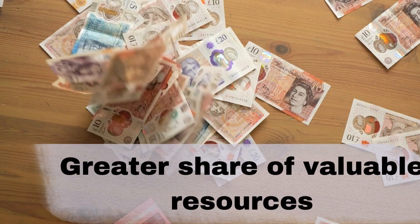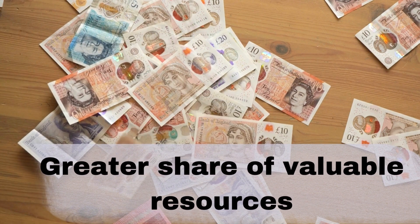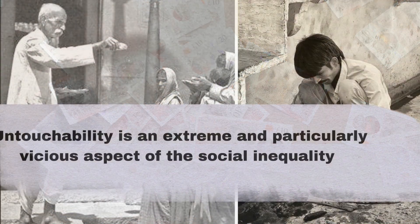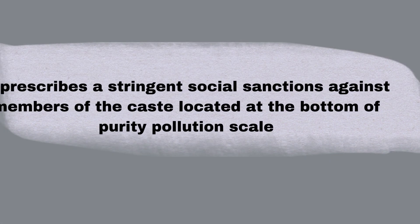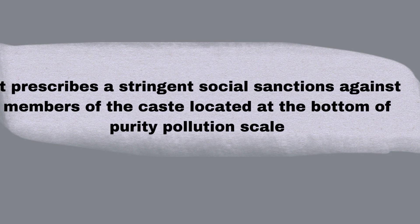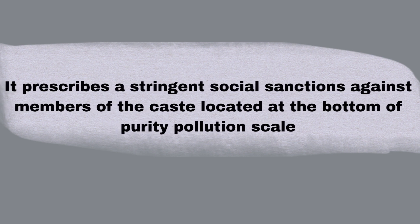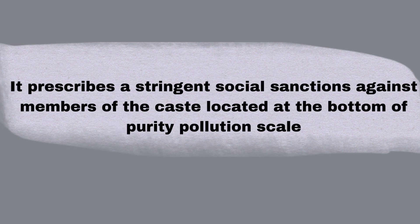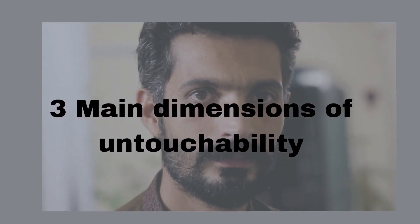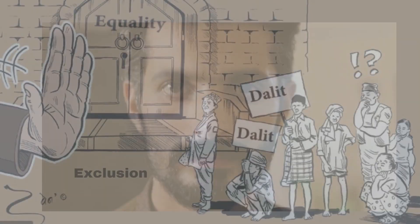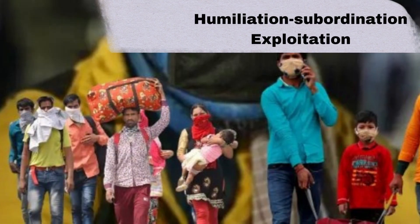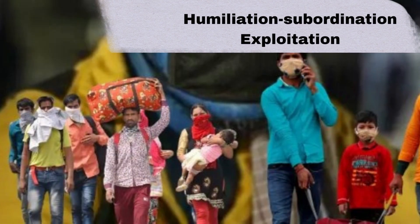In every society, some people have a greater share of valued resources. Untouchability is an extreme and particularly vicious aspect of the caste system that prescribes stringent social sanctions against members of castes located at the bottom of a purity-pollution scale. It is important to emphasize that the three main dimensions of untouchability are exclusion, humiliation, subordination, and exploitation.